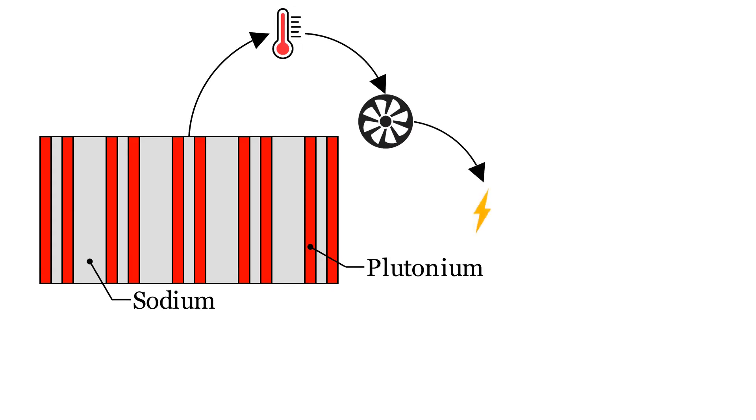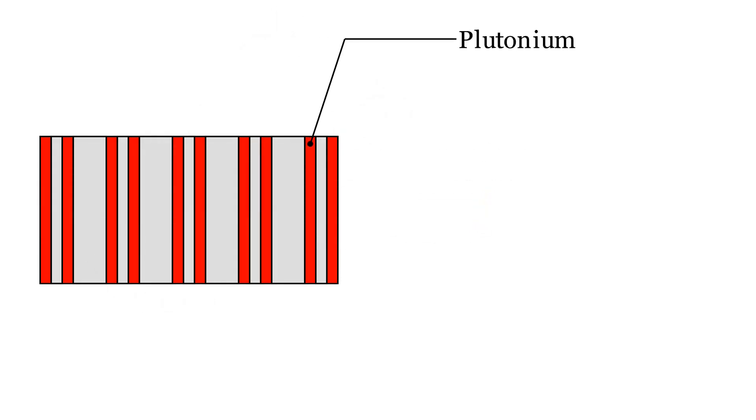But where does this heating energy come from? From the plutonium, that has the particularity to have a nucleus that can break in two parts when interacting with neutrons - the nuclear fission.